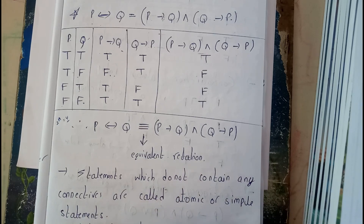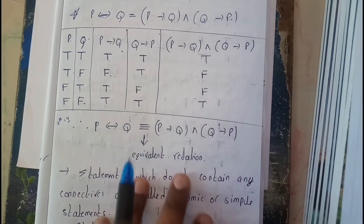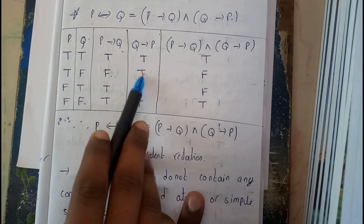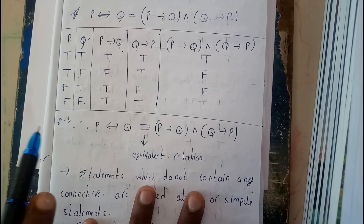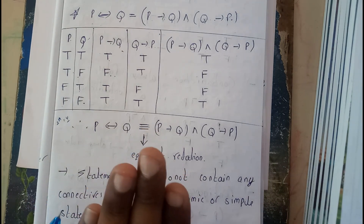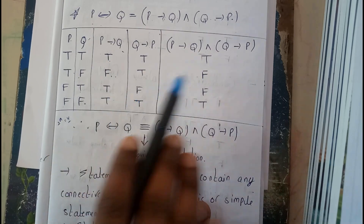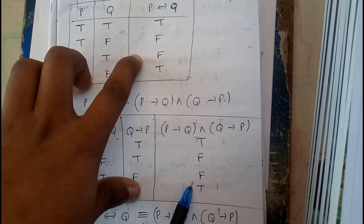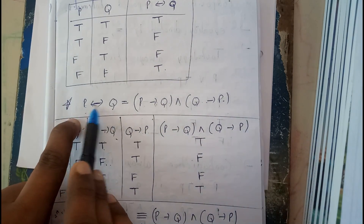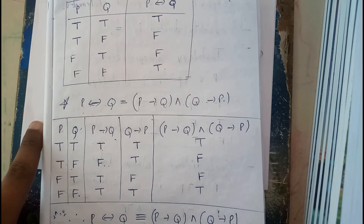In the previous video we discussed the AND condition. AND is a reciprocal of OR, so if any one of them is false, the result is false; if both are true, the result is true. Remember only that single condition. The final AND column gives: T, F, F, T. Both the biconditional column and this AND column are matching, hence the statement is proved — p double implies q can be written as p implies q AND q implies p.